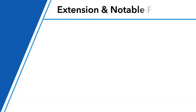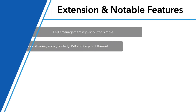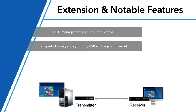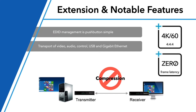We do extension — for Christie, we do a lot of transmitter to receiver, so it's point to point. It's really 4K 60 4:4:4, extremely low latency, and uncompressed. It's perfect for us for extension modes. No compression — we love that.